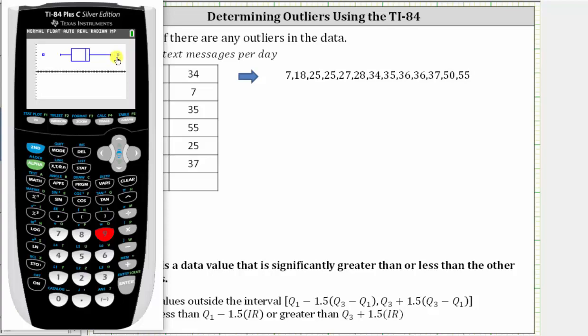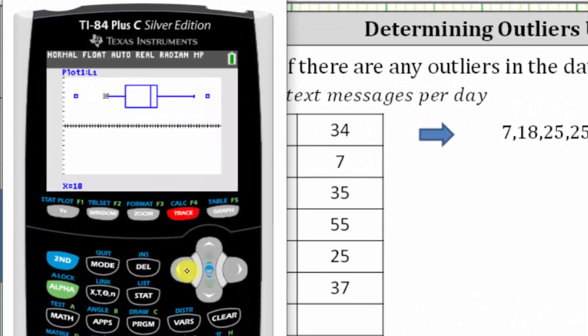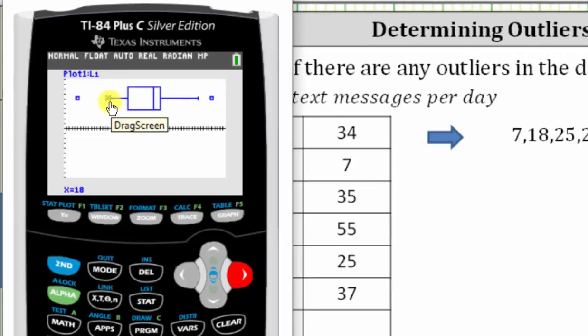So notice how we have an outlier on the left as well as on the right. To determine these values, we press trace. Press the left arrow, which shows the outlier of seven. If we press the right arrow again, we can see the left tail starts at the value of 18. Right arrow again gives us quartile one. Right arrow again gives us the median. Right arrow again gives us quartile three. Right arrow again gives us the end of the tail on the right.